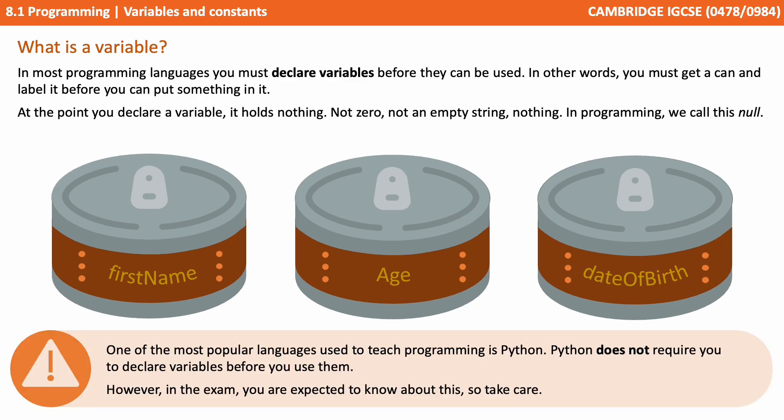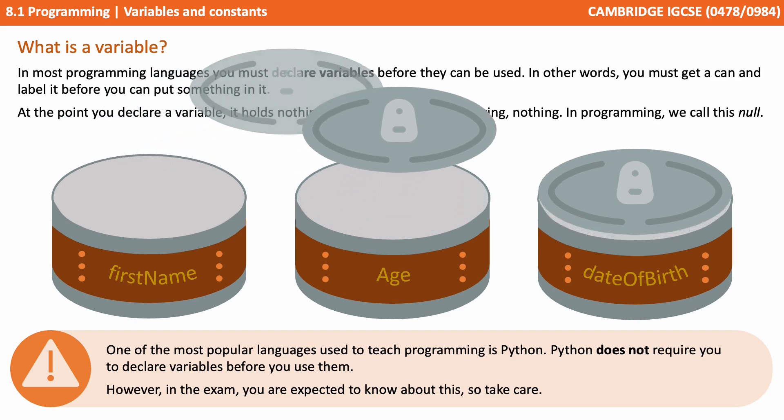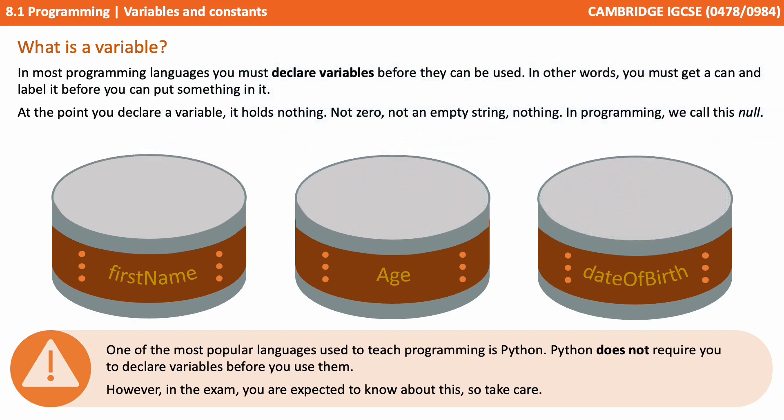In most programming languages, you must declare variables before they can be used. In other words, you must get a can and label it before you can put something in it. At the point you declare a variable, it holds nothing — not zero, not an empty string, nothing. In programming, we call this null. The cans are empty.